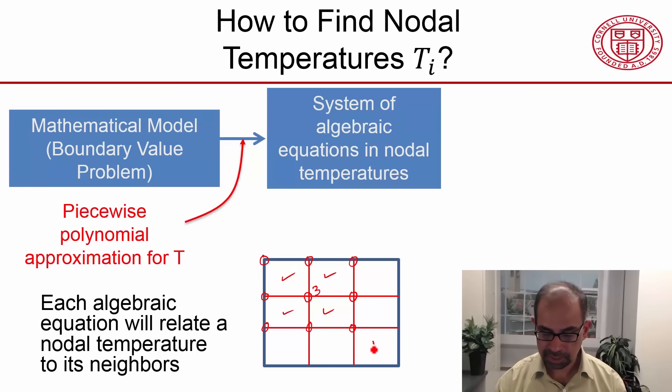This node is not connected to this element, so those nodes won't be involved in writing that relationship. And we also know that there's going to be a constant term that comes from heat generation. In this case, we don't have heat generation, so the algebraic equation at this node won't contain any constant term.